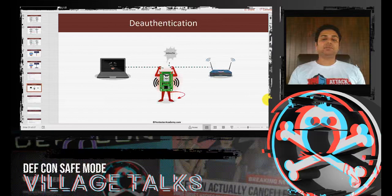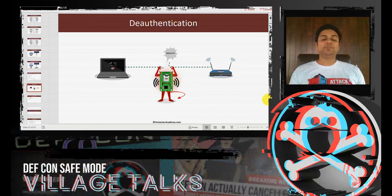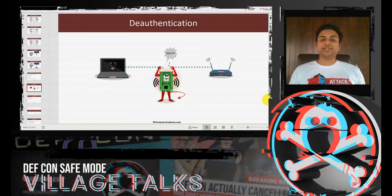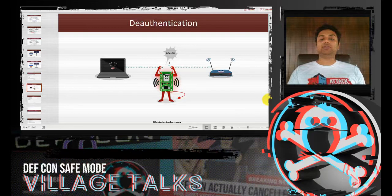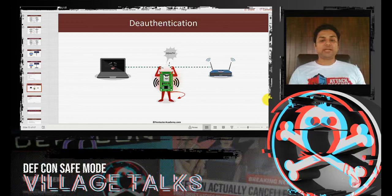A deauthentication attack sends a spoofed deauth packet to the client, posing as the access point (or vice versa), telling the other party it no longer wants to be connected. The receiving party, having no way to verify the source, disconnects. This is useful when a client is already connected and you need to force a reconnection to capture the 4-way handshake — since the handshake only occurs when the device connects fresh to the access point.